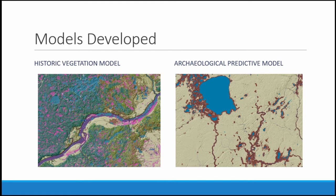We did actually two types of models in R. We did a historic vegetation model as part of our data development stage. We spent actually a lot more time on data development than on modeling — many years, in fact — cleaning up the archaeological data, doing quality control, and working on our geomorphic data, which had different areas mapped using different classification systems. The historic vegetation model was an attempt to model historic vegetation at a higher resolution than what we had available. We have a script that will do this classification model, but I'm not going to focus on that today.